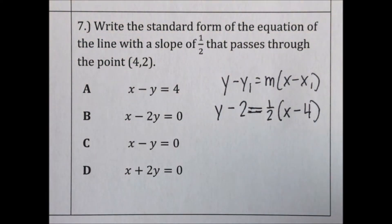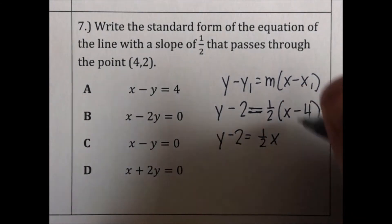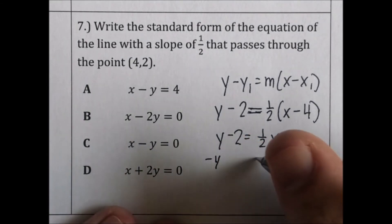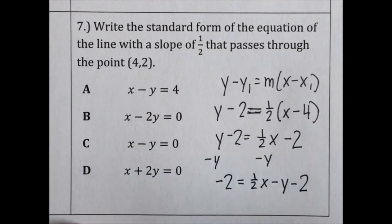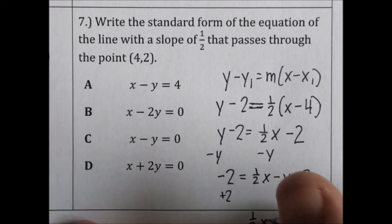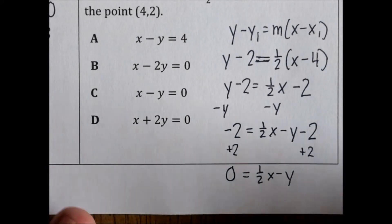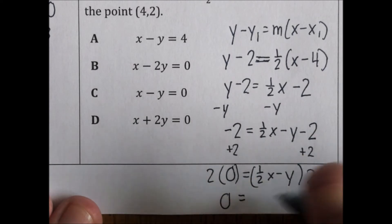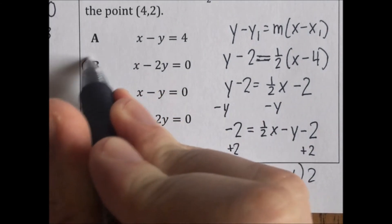Now we need to get it in standard form, so we need to get x and y on the same side. Distribute on the right to get 1 half x minus 2. Move the y to the right by doing minus y to both sides: negative 2 equals 1 half x minus y minus 2. Add 2 to both sides: 1 half x minus y equals 0. We can't have fractions, so double everything: x minus 2y equals 0. Choice B.